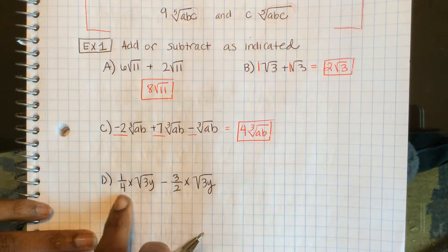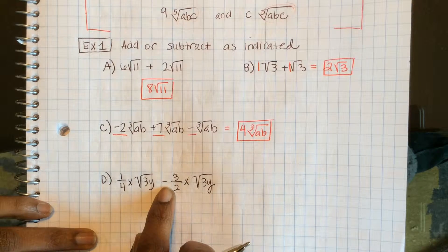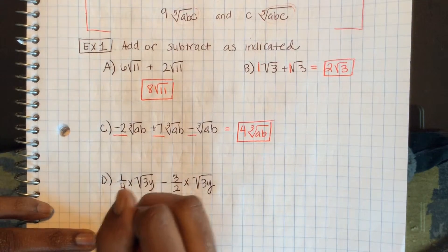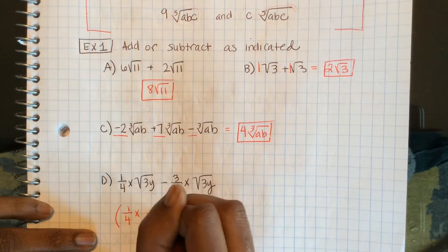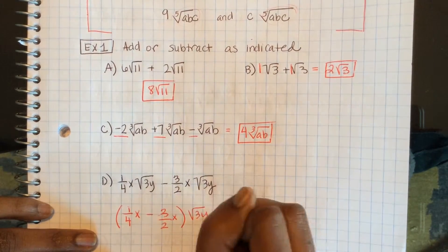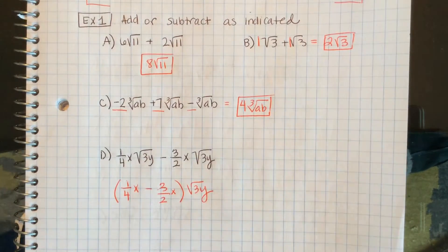Here we have 1/4 x minus 3/2 x of the same radical. So I'm going to have 1/4 x minus 3/2 x multiplied by my radical. In order to combine those fractions, they need to have common denominators.